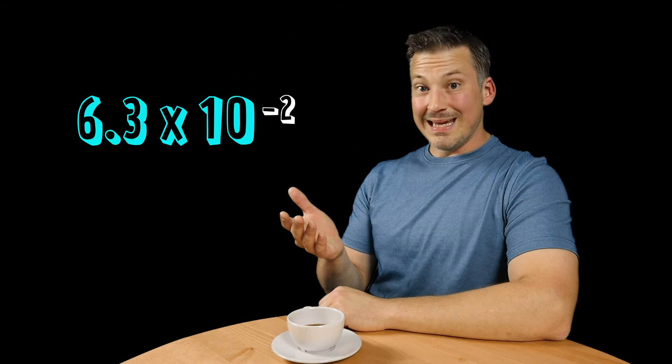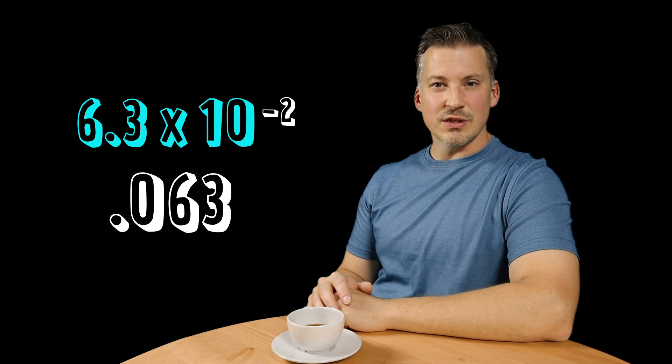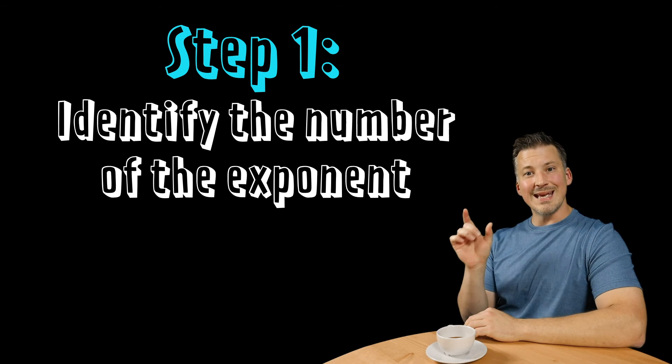So now, what happens if we have to go the other way? Meaning, if we have to take a value in scientific notation and convert it back into a number? Well, it turns out we can follow a very simple three-step process. The first thing you have to do is identify the number on the exponent of 10.